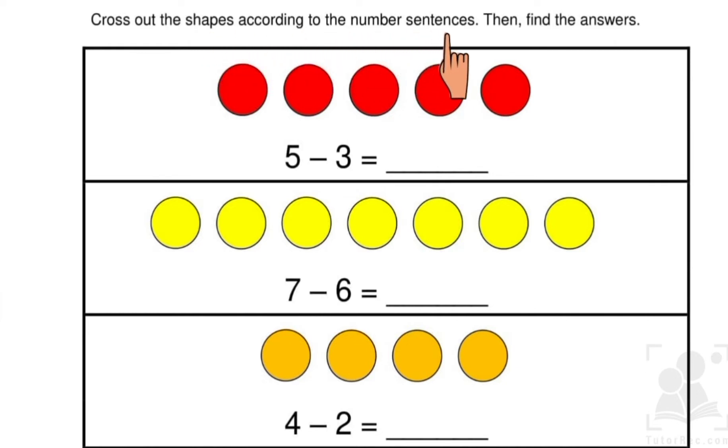He is asking us to cross out the shapes according to the number sentences, then find the answer. First of all, we see some balls in front of us. Under that, we have some numbers subtracting each other. Five is subtracting three, so first we will count the balls.